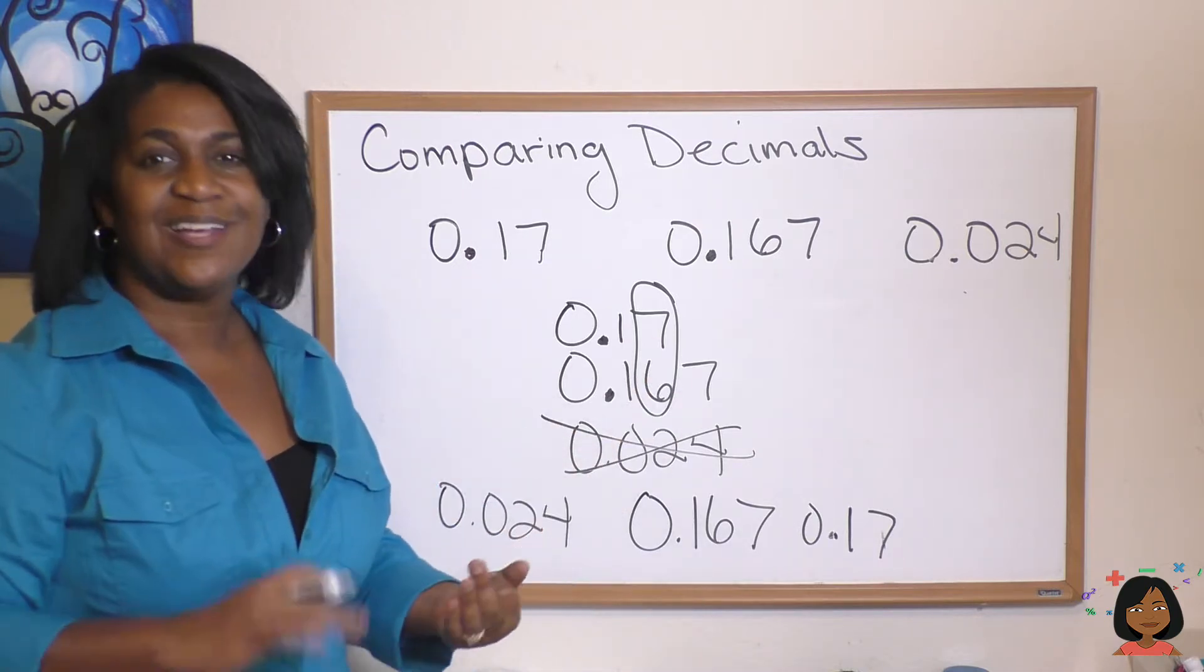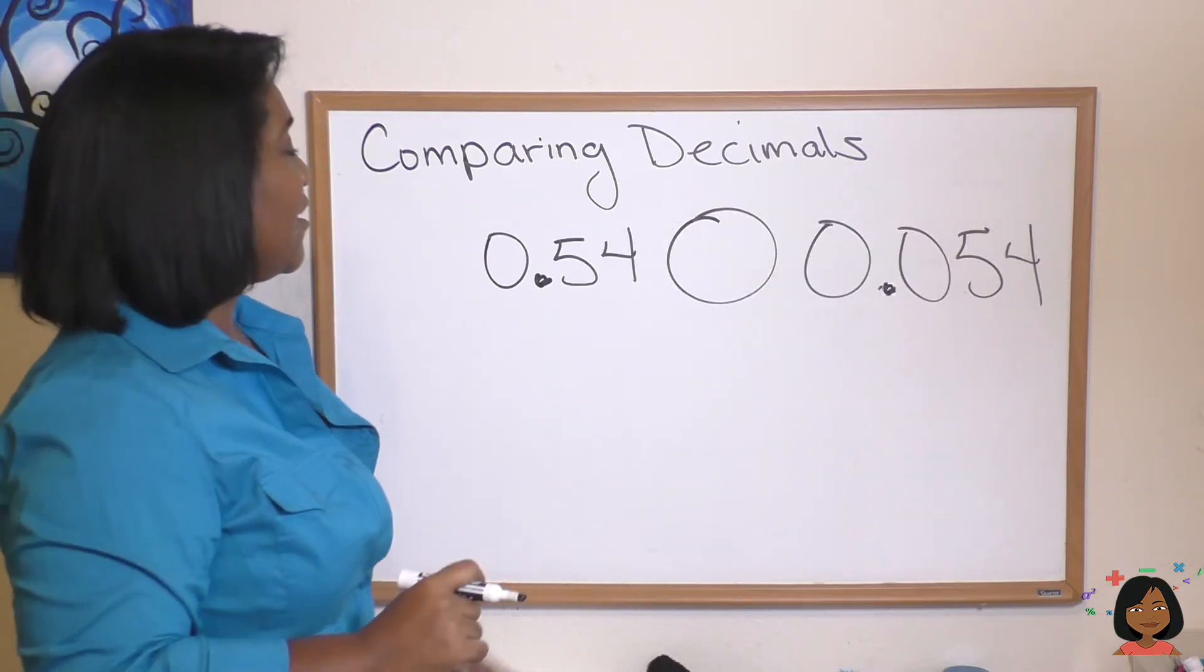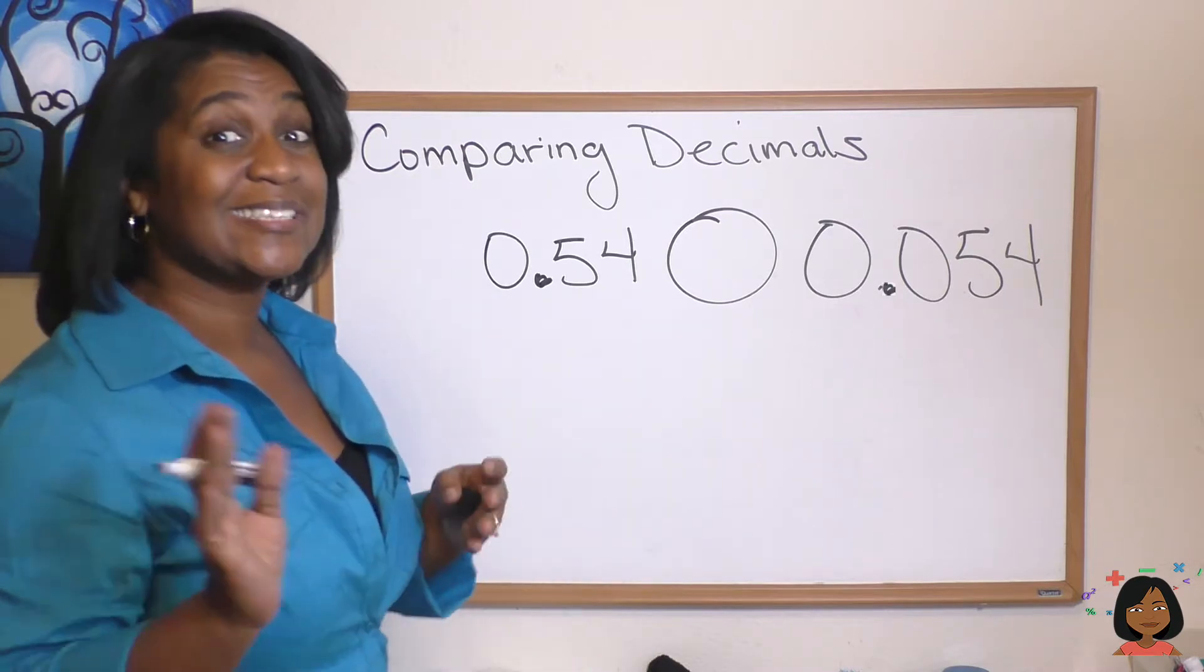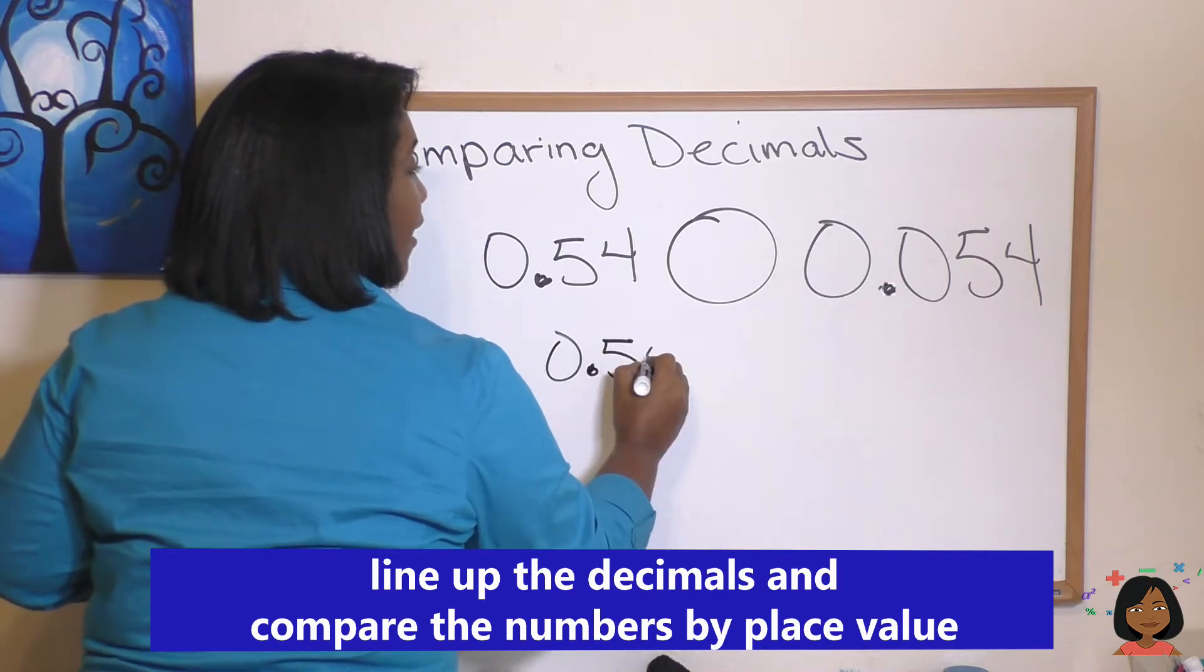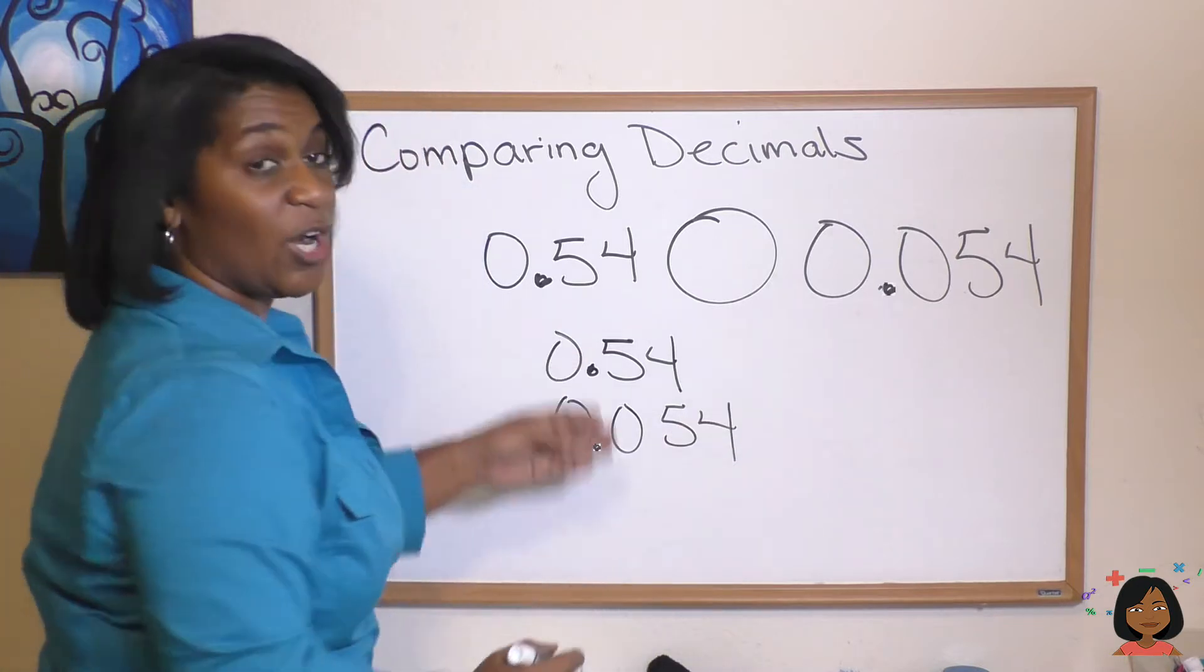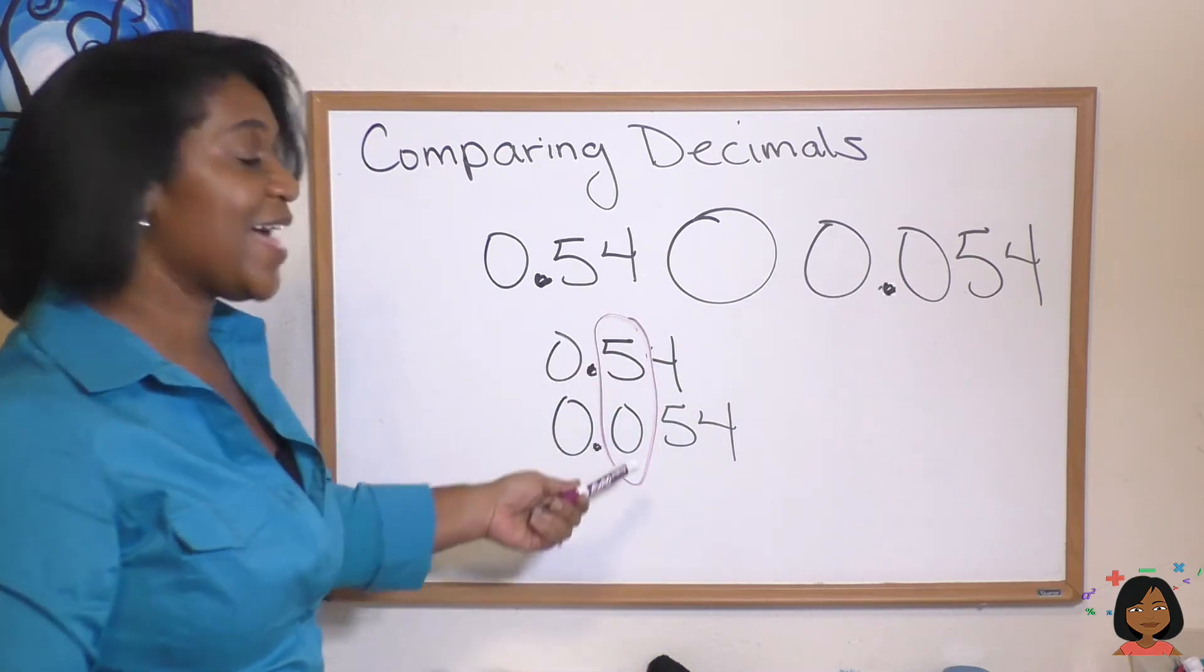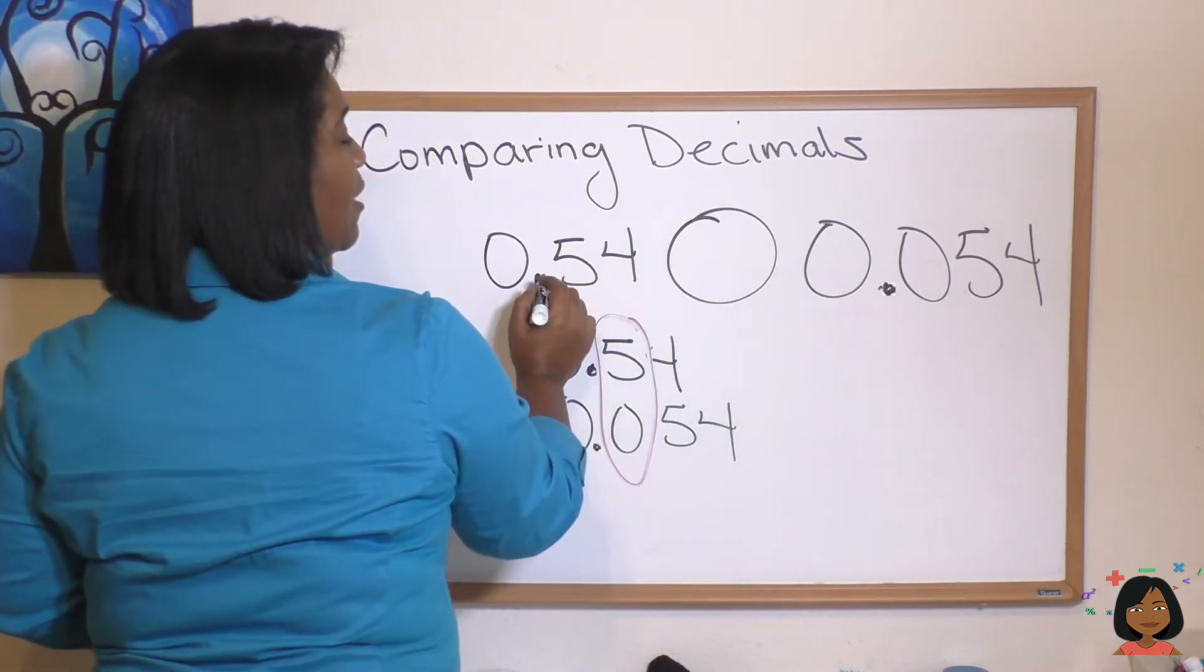Let's try a few more examples. Here we have two decimals: 54 hundredths and 54 thousandths. Which one is smaller? We're going to compare them. Let's line them up: 0.54 and 0.054. Start with the tenths place, so I'm going to circle it so you can easily see it. Which one is the smaller number? It's easy to see that our zero is the smallest number, so 0.54 is greater than 0.054.